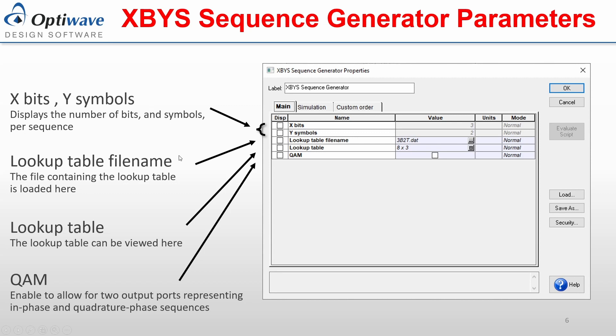The parameter lookup table filename holds the file where the lookup table is contained. The component will automatically calculate X and Y from this.